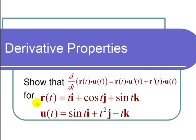For the vector valued functions, r of t equals t i plus cosine of t j plus sine of t k, and u of t is equal to sine of t i plus t squared j minus t k.